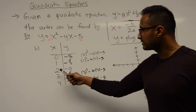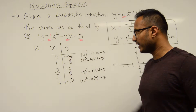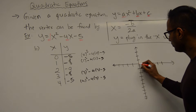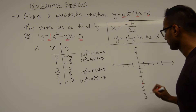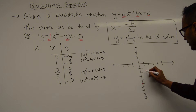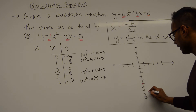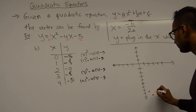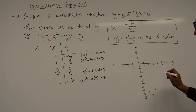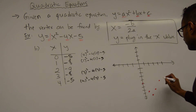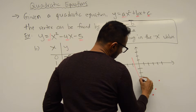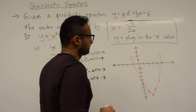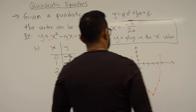So in part b, the table has the vertex at the center, two points to the left, and two points to the right. Now let's plot these: (0, -5), (1, -8), (2, -9), (3, -8), and (4, -5). You also have a graph in part c so you can graph along. Our sketch — it doesn't have to be exact — looks like a parabola opening upward.